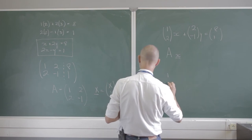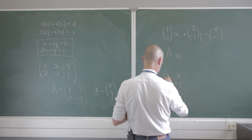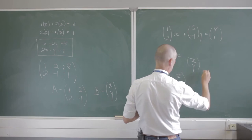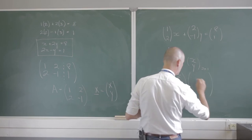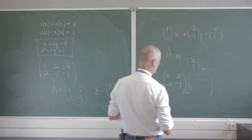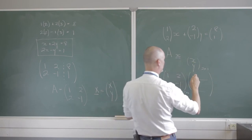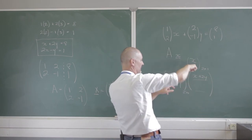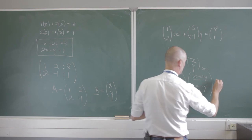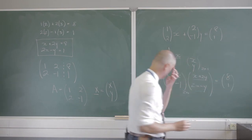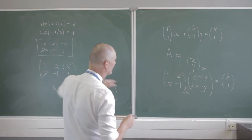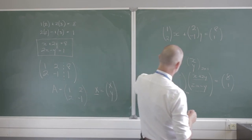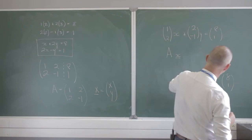Let's do that multiplication: 1, 2 and 2, negative 1 multiplied by the vector x and y. It's 2 by 2 times 2 by 1, so the result is 2 by 1. That gives us x plus 2y and 2x minus y, which must equal the vector 8, 1. These are just different ways of writing the exact same thing — but this gives us a very beautiful way of writing it.